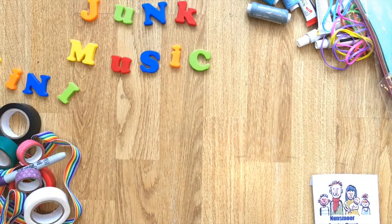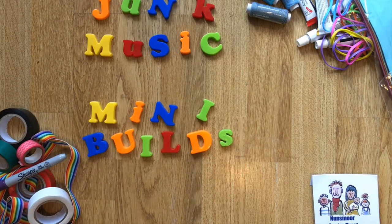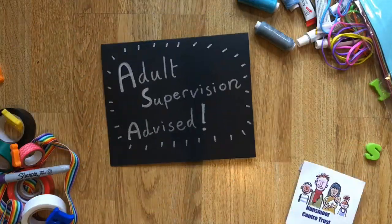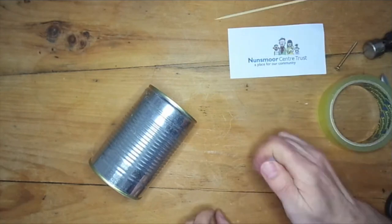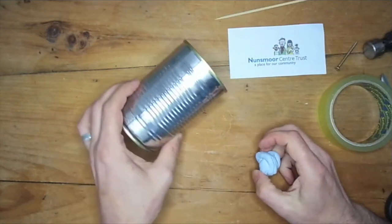Junk Music Mini Builds. Parental Supervision Advised. Hello! Today we are going to make a cuica, an instrument from Brazil, and play along to a drumming track at the end of the video.